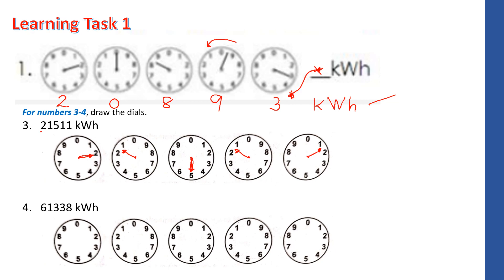For number four, the reading is 61338 kilowatt-hours. From the center of each dial: the first pointer can be exactly on 6 or between 6 and 7. Next is 1 — between 1 and 2 or exactly 1. Then 3 — between 3 and 4 or exactly 3, just not reaching 4. Another 3 — same, between 3 and 4 or exactly 3. And last, exactly 8 or between 8 and 9. That is how simple drawing the dials is.